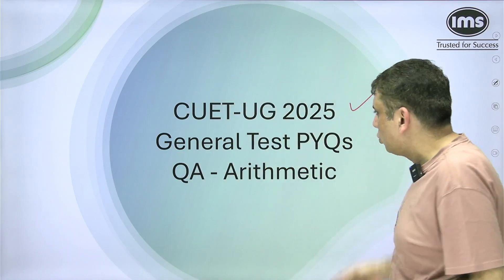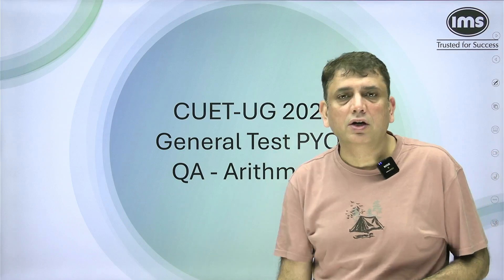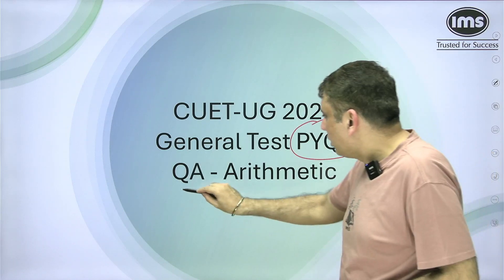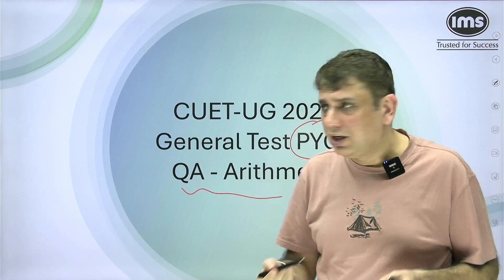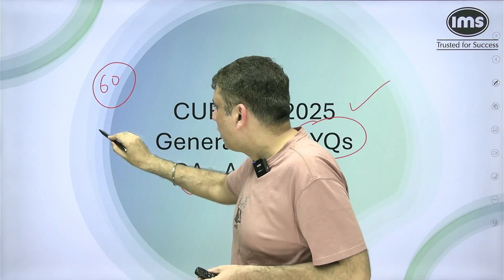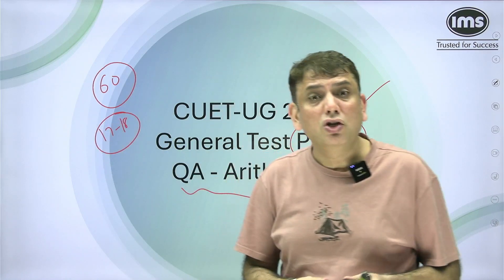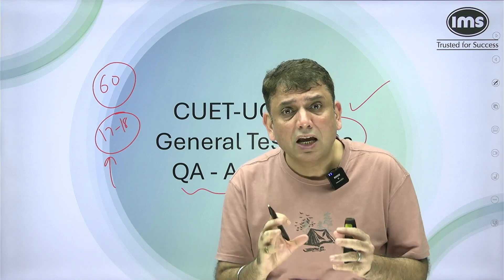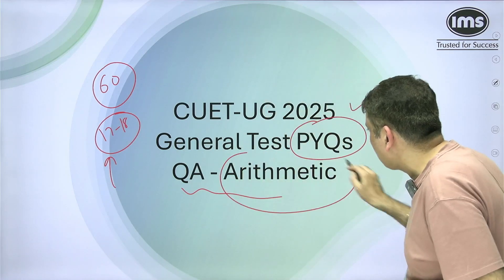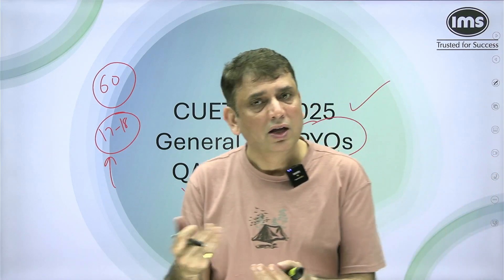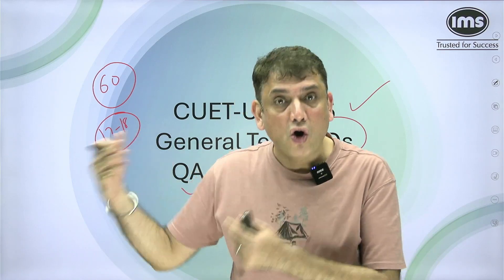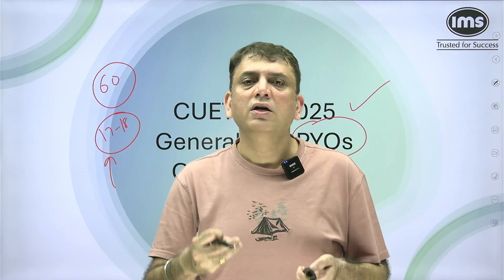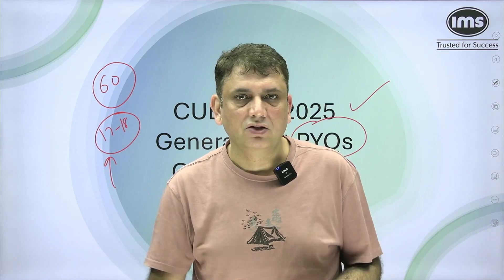Hello, CUT UG 2025 aspirants. The general test is a very important section of CUT. We will be discussing past year questions. As far as QA is concerned in GT, there are 60 questions and close to 17-18 questions are from the QA section. Out of those, 50% — about 8-9 questions — are from the arithmetic part. So arithmetic is very, very important: 50% of the QA section of the general test is from arithmetic. Let's discuss some good questions from actual CUT UG general test past year papers.